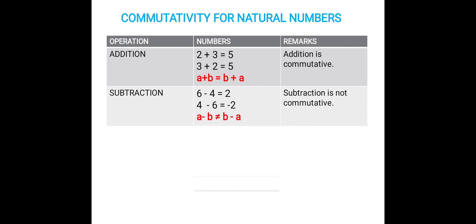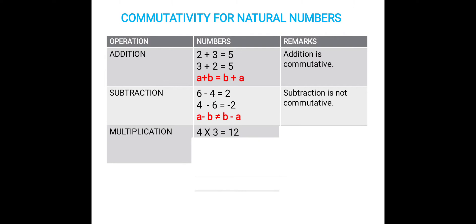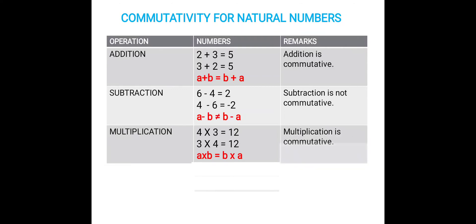Similarly, let us check for multiplication. We will consider any two natural numbers and multiply them. 4 multiplied by 3 equals 12. 3 multiplied by 4 equals 12. So for multiplication, the order of the numbers does not matter — we get the same answer. a multiplied by b equals b multiplied by a. Therefore, multiplication is commutative.